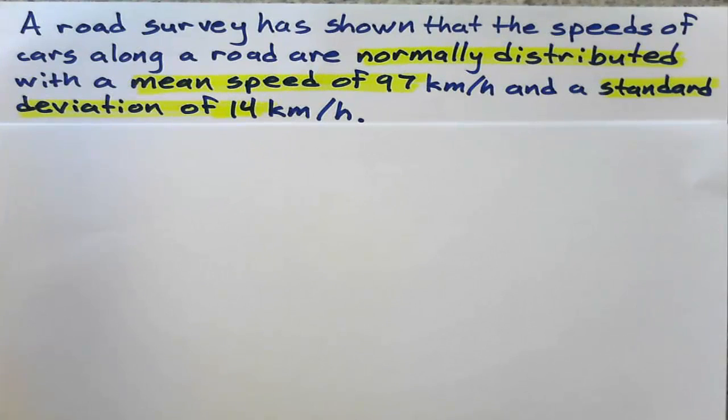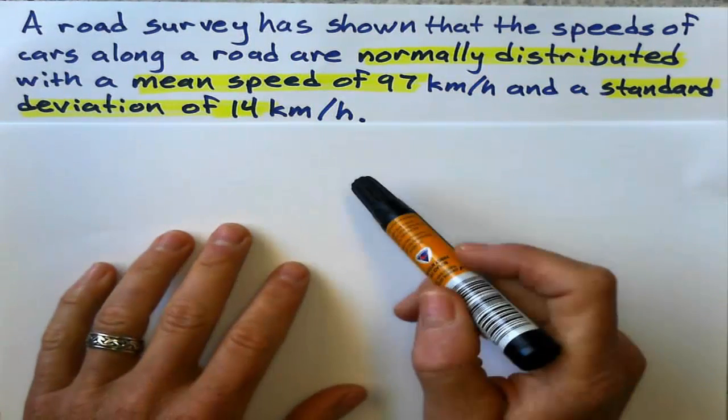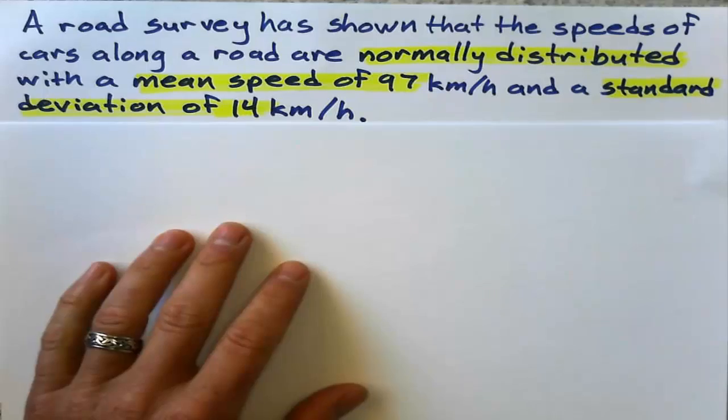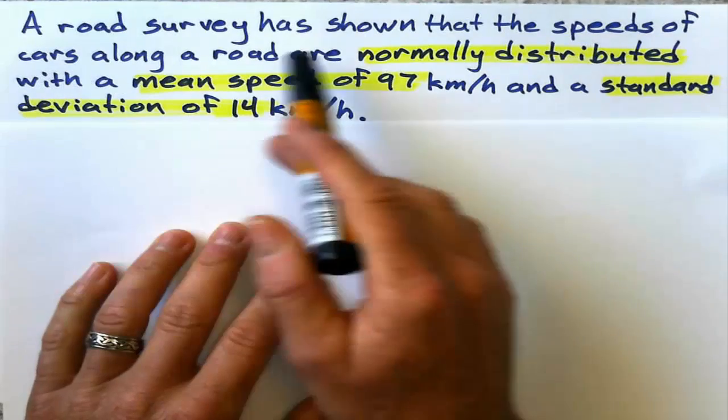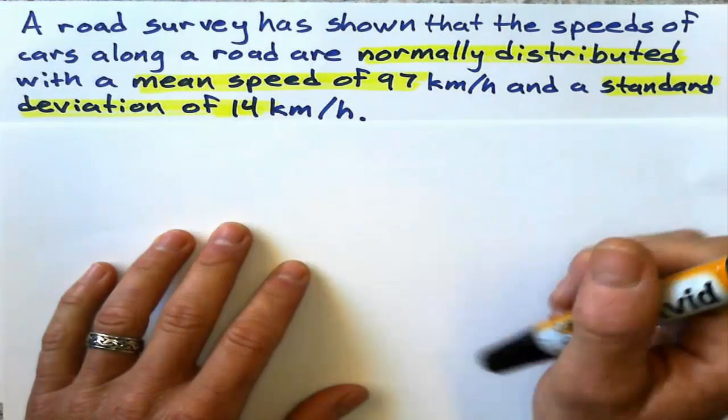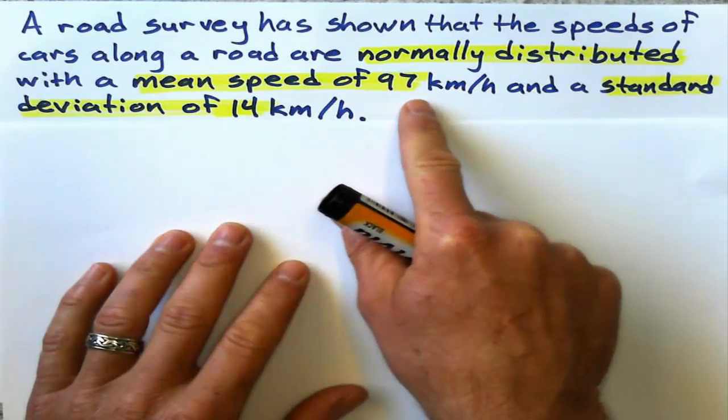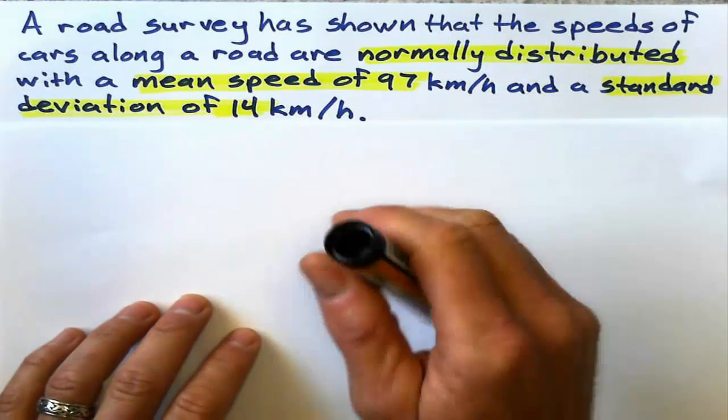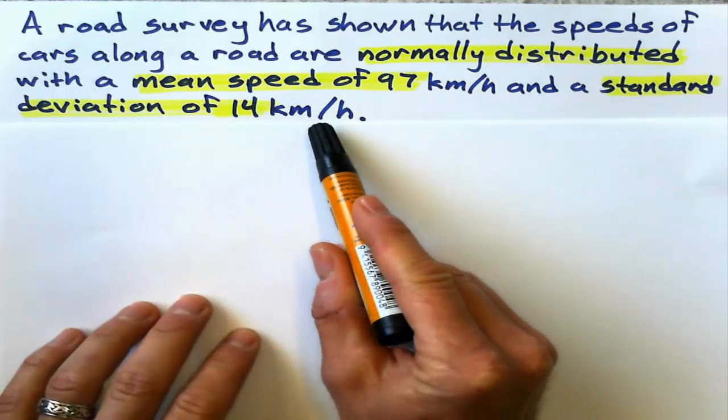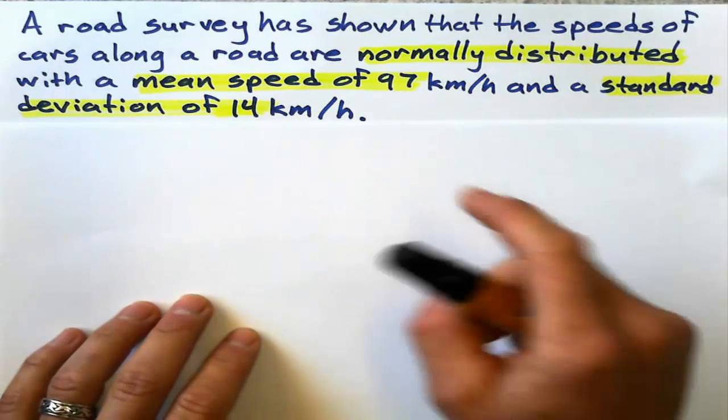Okay, hello. We're going to be finding the interquartile range using normal distribution. Here's the problem: A road survey has shown that the speeds of cars along the road are normally distributed with a mean speed of 97 kilometers an hour and a standard deviation of 14 kilometers an hour.